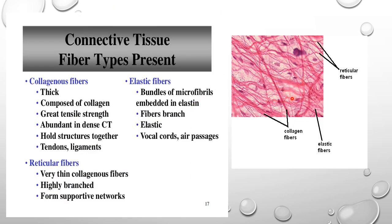There are three types of fibers present in connective tissue. Collagen fibers are thick bundles that are wavy and provide tensile strength and support to the connective tissue. They are abundant in dense connective tissue and hold structures together. Where tensile strength is required — for example, in the tendons and the ligaments — a lot of collagen fibers are present.